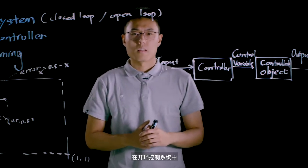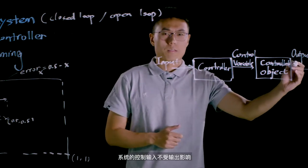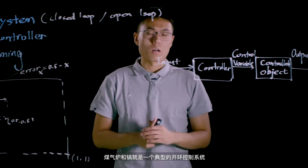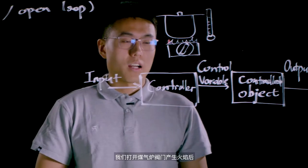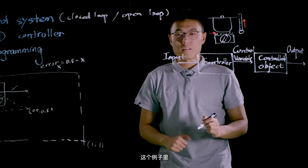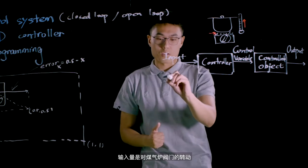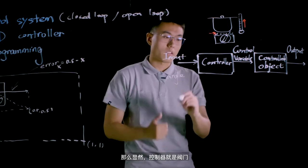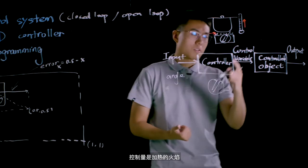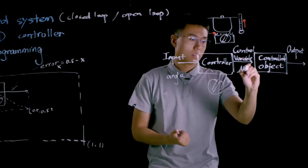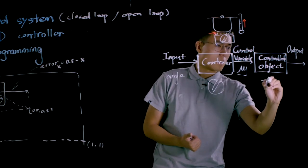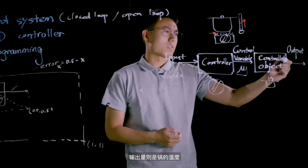In an open loop system, the input is not affected by the output. In our daily life, gas stove and the pot form a typical open loop system. When we turn on a valve of the gas stove to produce flame, we start to heat the pot. So in this example, the input is the angle of rotation of the valve, and obviously the controller is the valve itself. The control variable is the flame, and the control object is the pot. And the final output is the temperature of the pot.